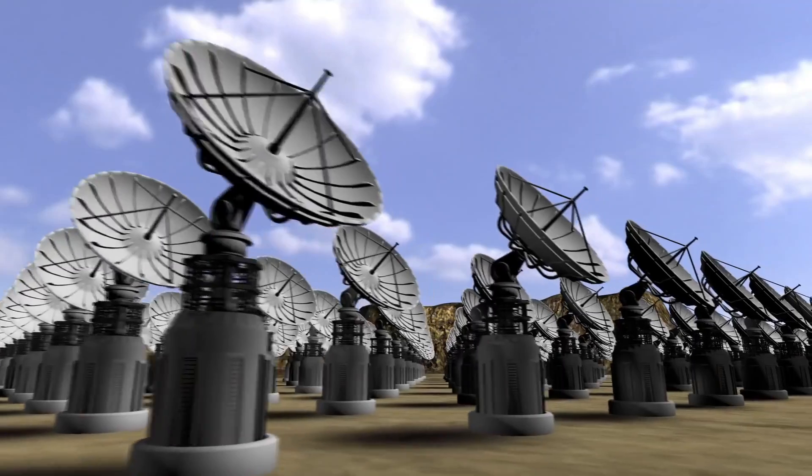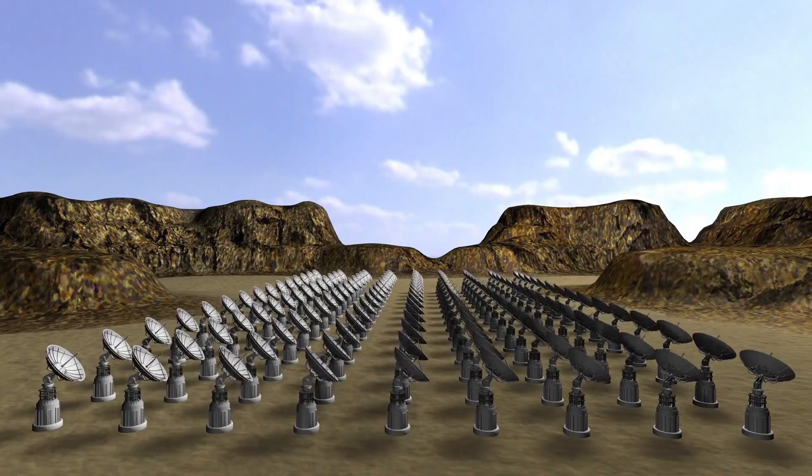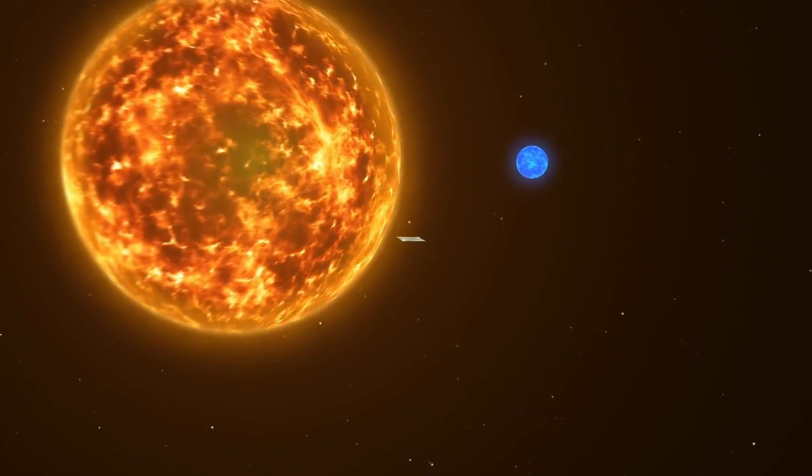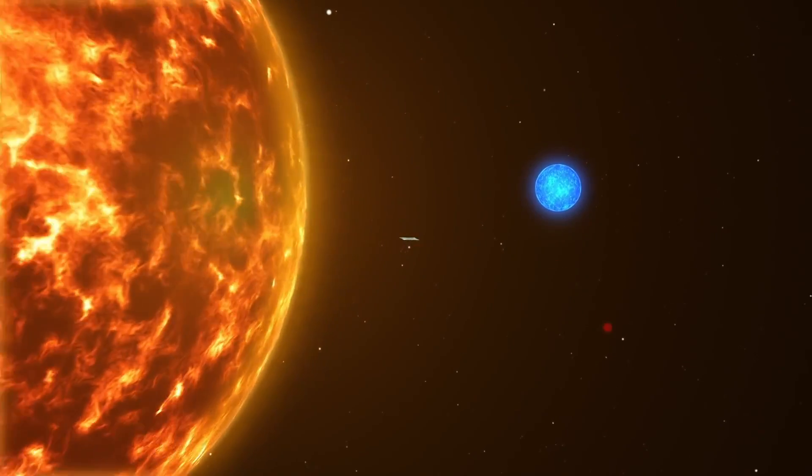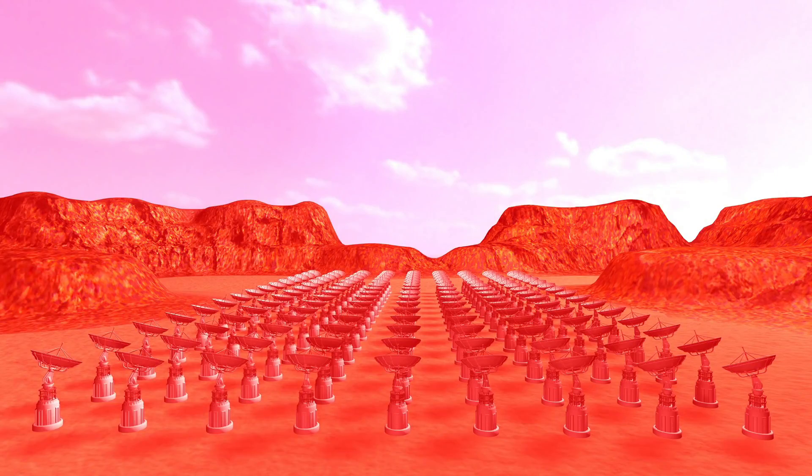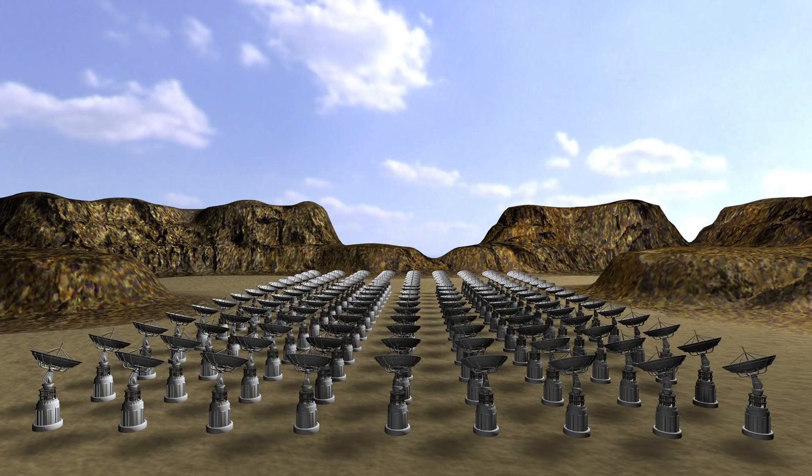Also in 2017, the Breakthrough Listen project made headlines when it detected a strange signal emanating from Proxima Centauri. The signal, known as BLC-1, was unlike anything else encountered by the project. While the origin of the signal is unknown, its discovery has piqued the scientific community's interest in the search for extraterrestrial intelligence.